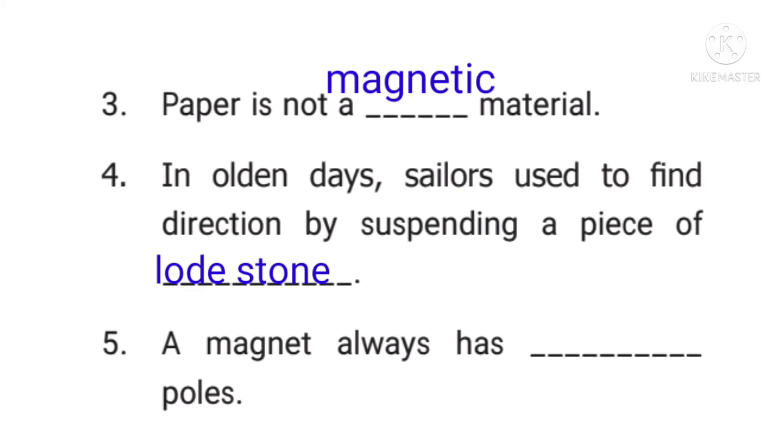5th question: A magnet always has dash poles. Answer: 2 poles.